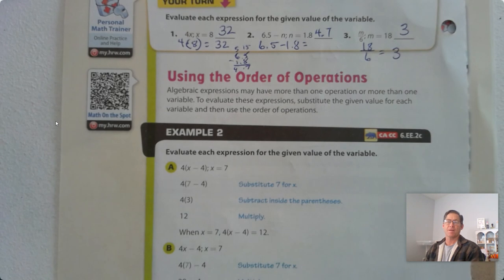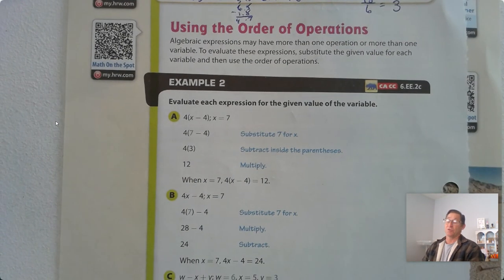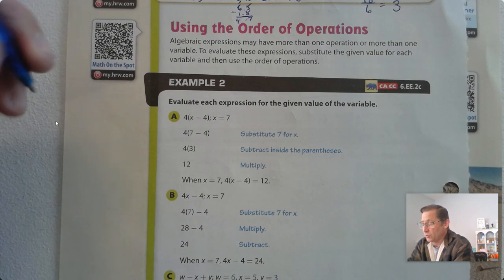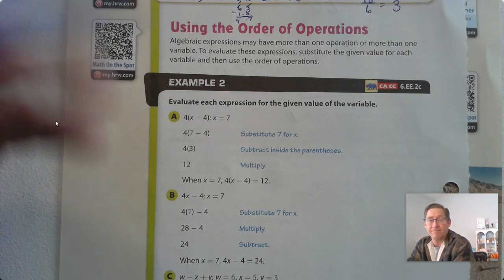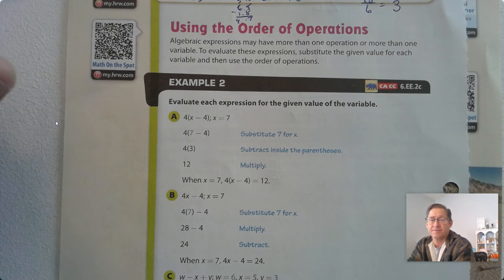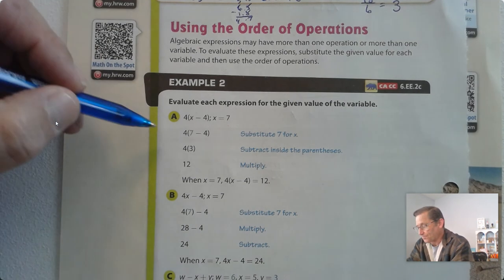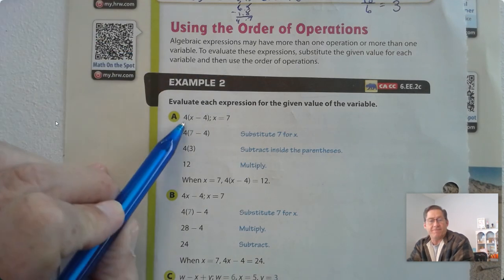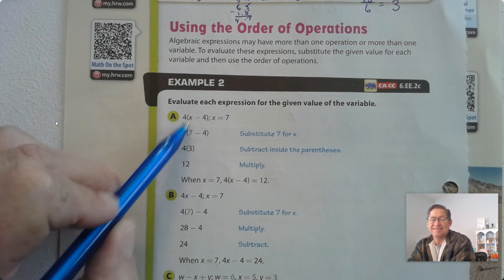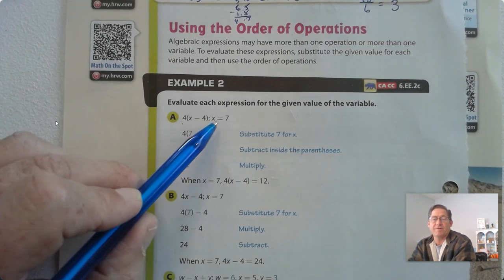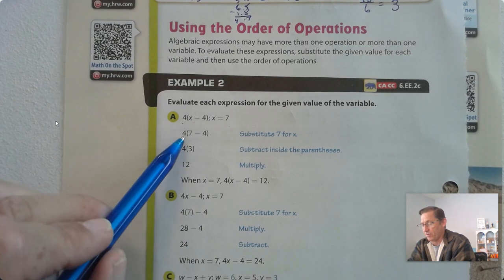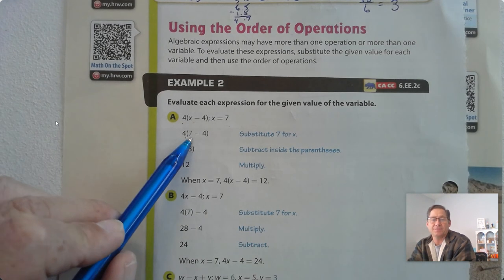All right, simple as that. So using the order of operations — sometimes algebraic expressions may have more than one operation or more than one variable. To evaluate these expressions, we're going to substitute the given value for each variable, just like we practiced in numbers 1, 2, and 3. And then we have to follow the order of operations. So evaluate each expression for the given value of the variable. We have 4 times the difference of x and 4, and we want to evaluate it when x equals 7.